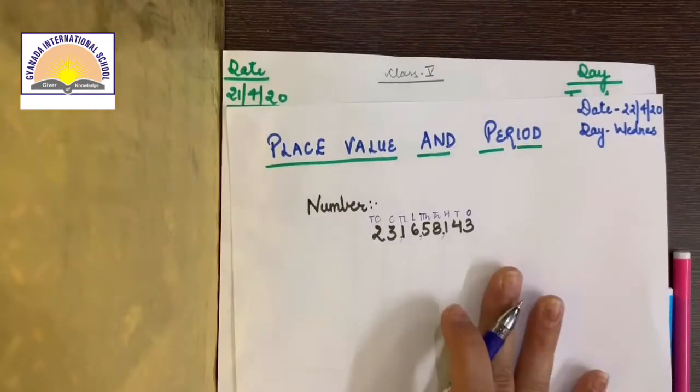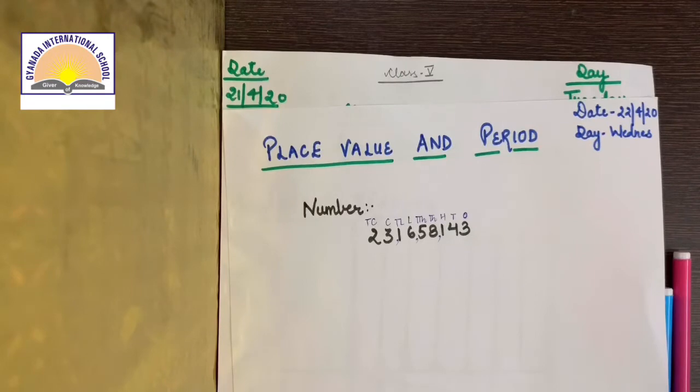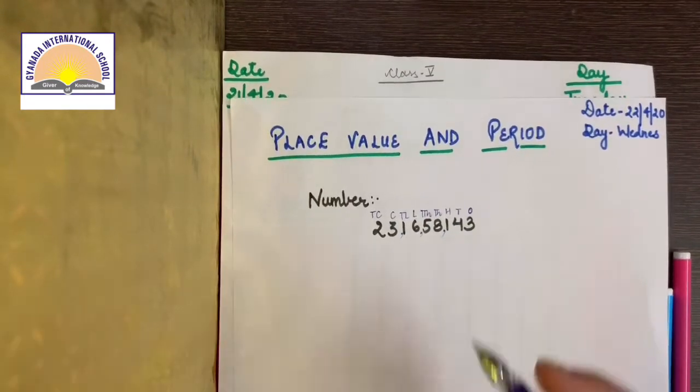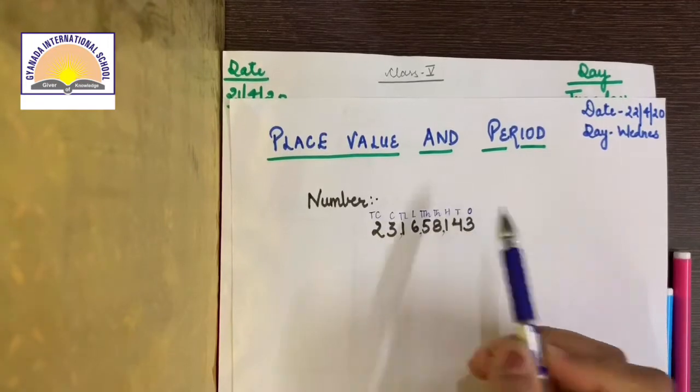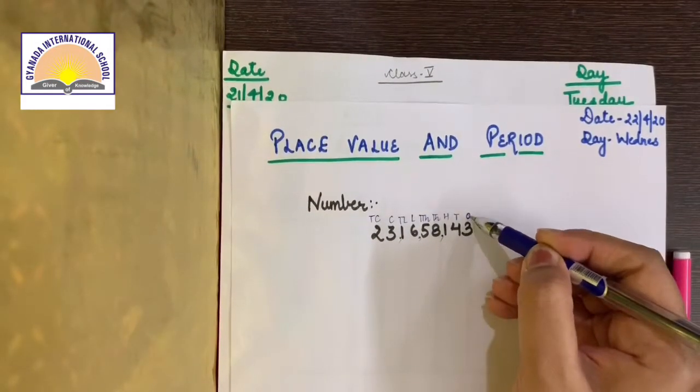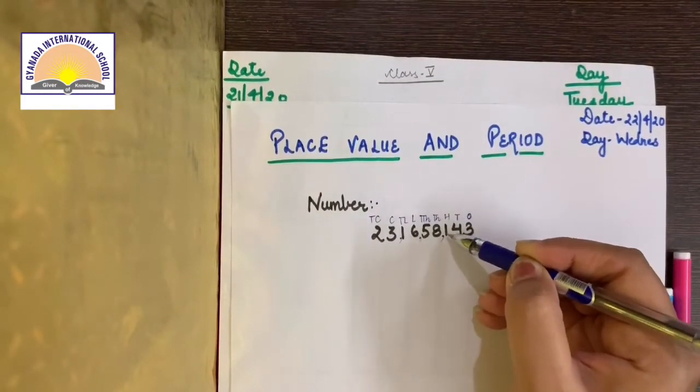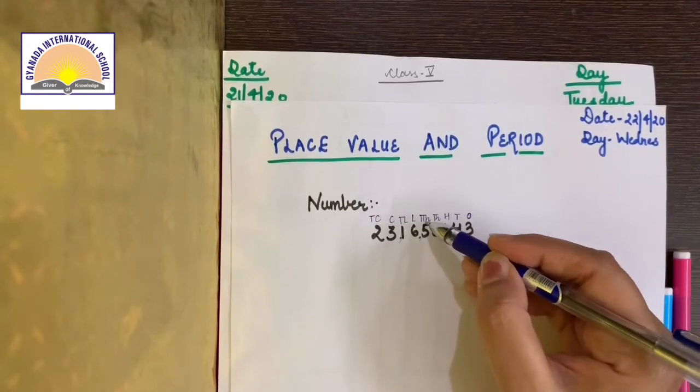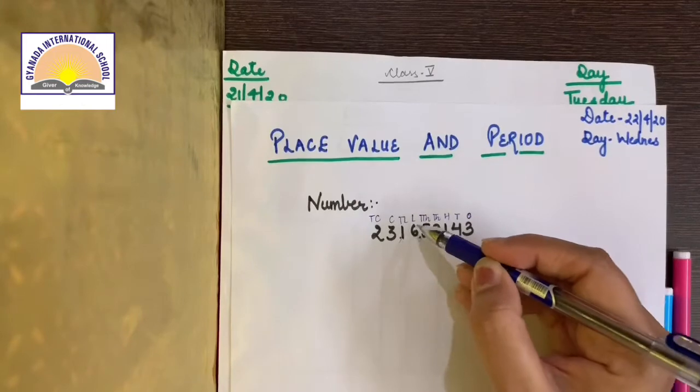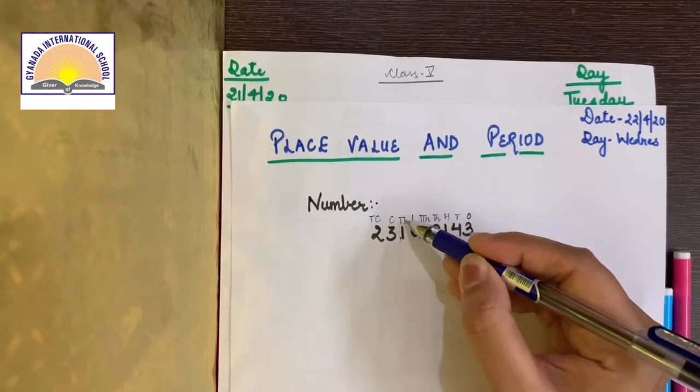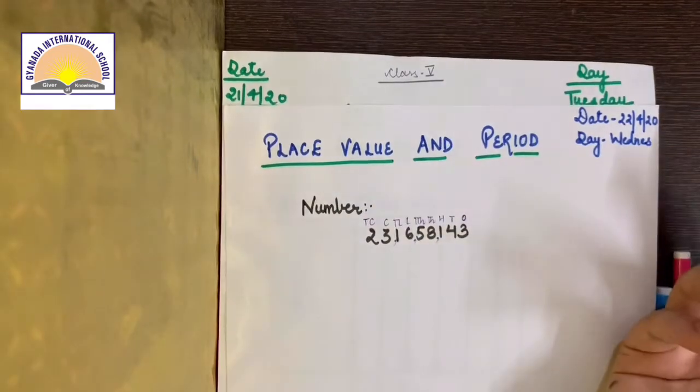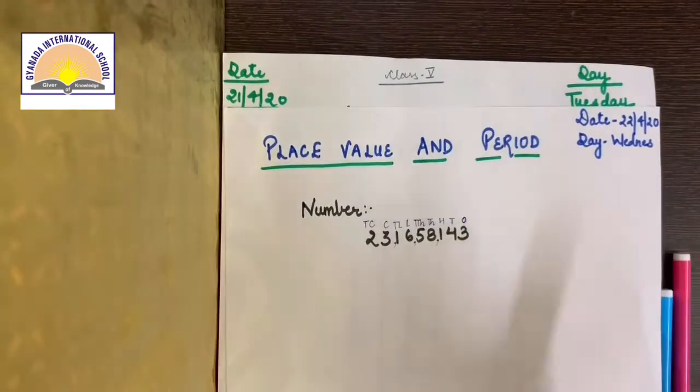So it is very easy. Where you put comma, it becomes your period. This is your place value. Like the place value of three is ones. For four, it is tens. For one, it is hundred. For eight, it is thousand. For five, it is ten thousand. For six, it is lakh. For one, it is ten lakh. For three, it is crores. And for two, it is ten crores. This is your place value. And period is very easy.